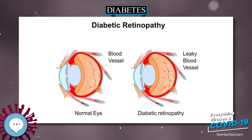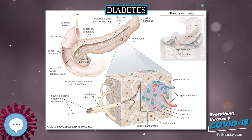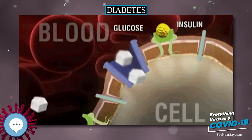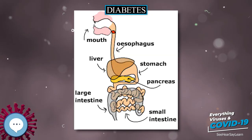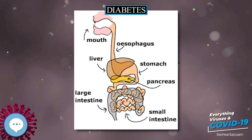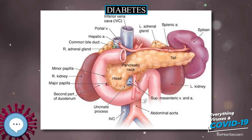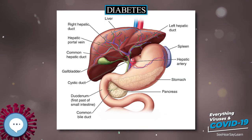Diabetes management concentrates on keeping blood sugar levels as close to normal without causing low blood sugar. This can usually be accomplished with dietary changes, exercise, weight loss, and use of appropriate medications — insulin and oral medications. Learning about the disease and actively participating in the treatment is important, since complications are far less common and less severe in people who have well-managed blood sugar levels.